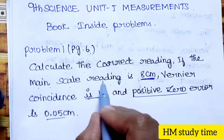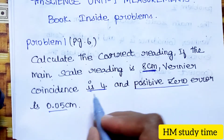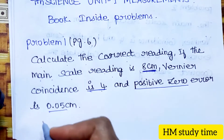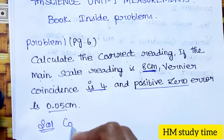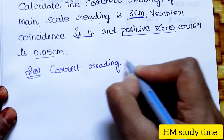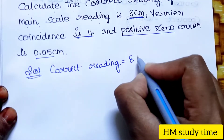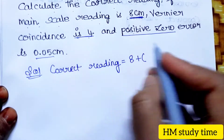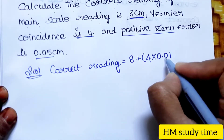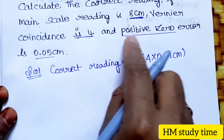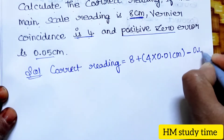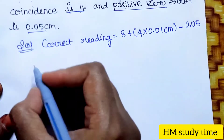If you look at the question, the main scale reading is 8 cm, Vernier coincidence is 4, and positive zero error is 0.05. The solution: correct reading is equal to 8 plus Vernier coincidence 4 into 0.01, and positive zero error is minus 0.05.